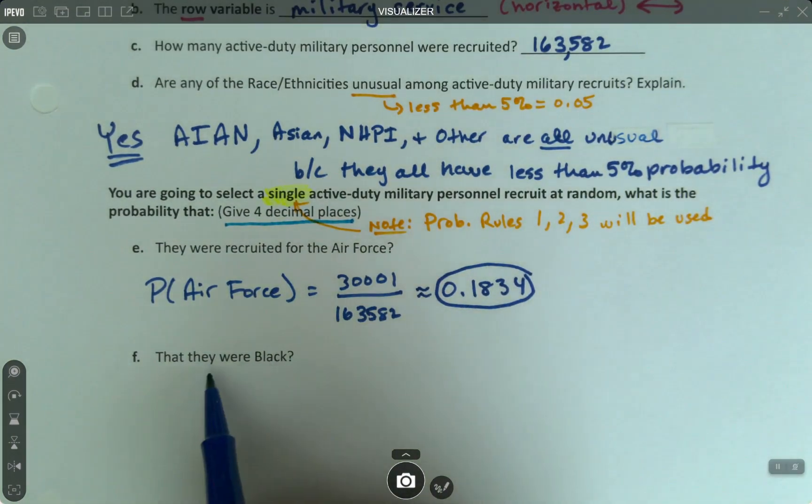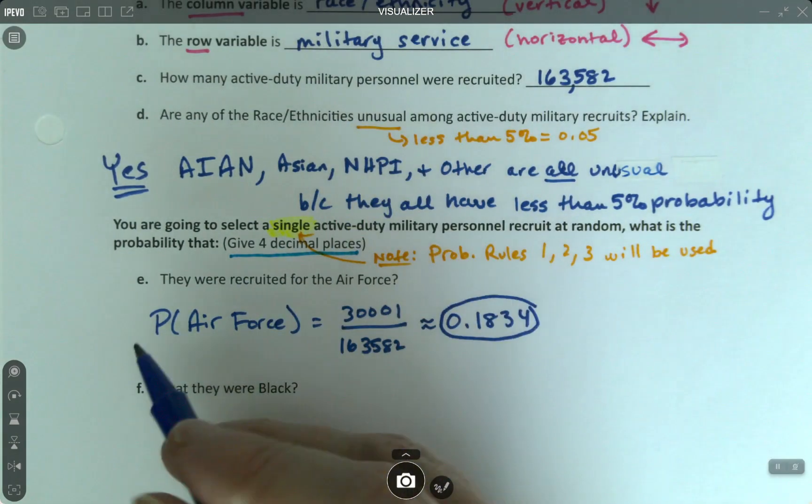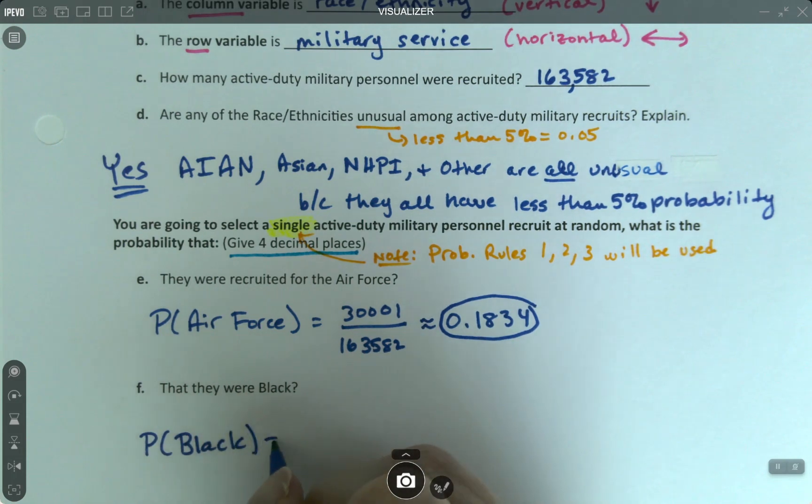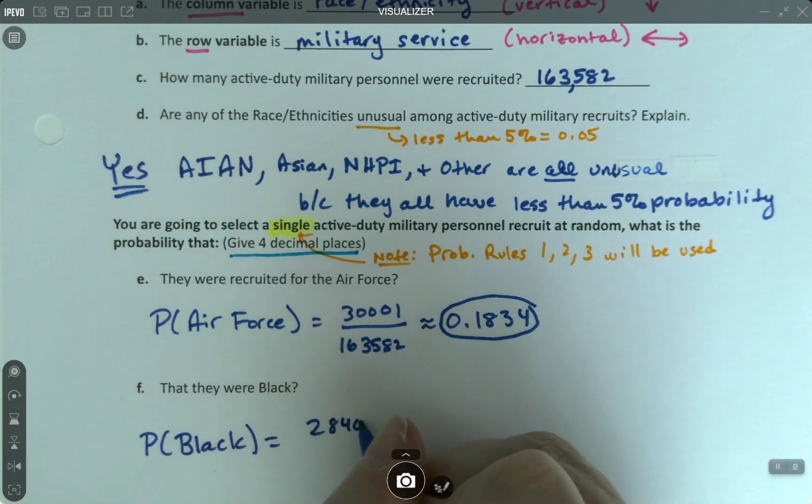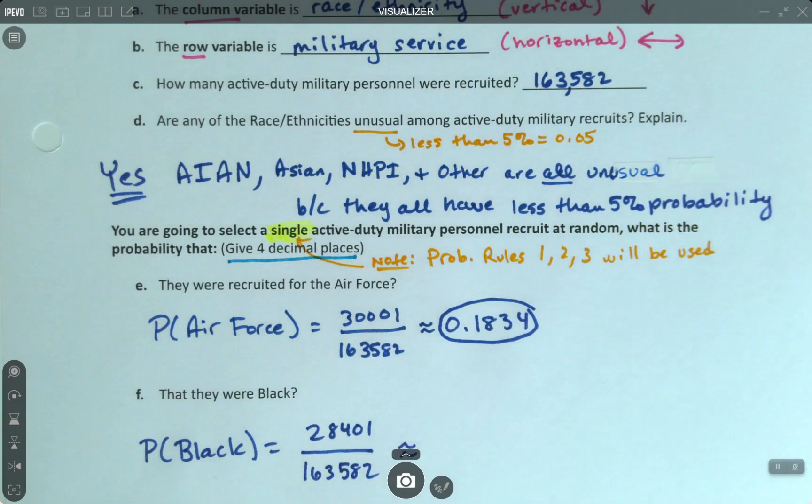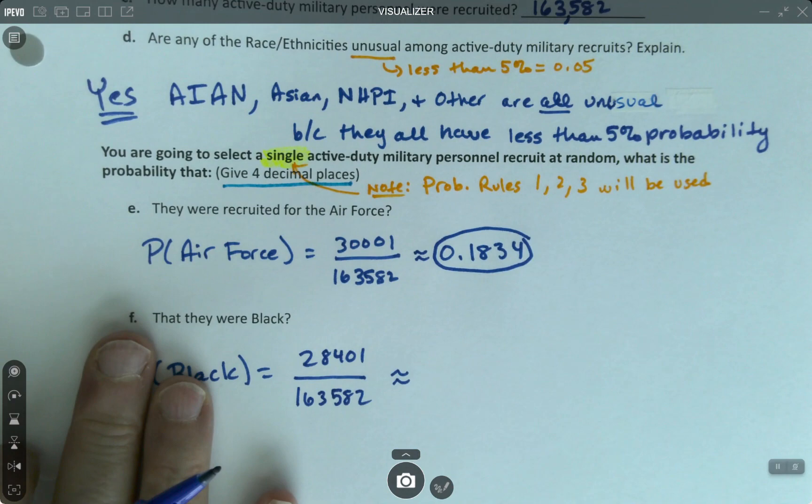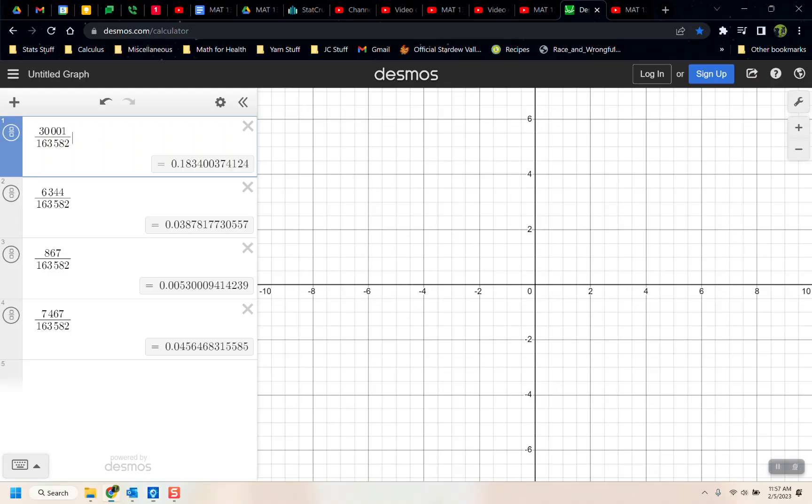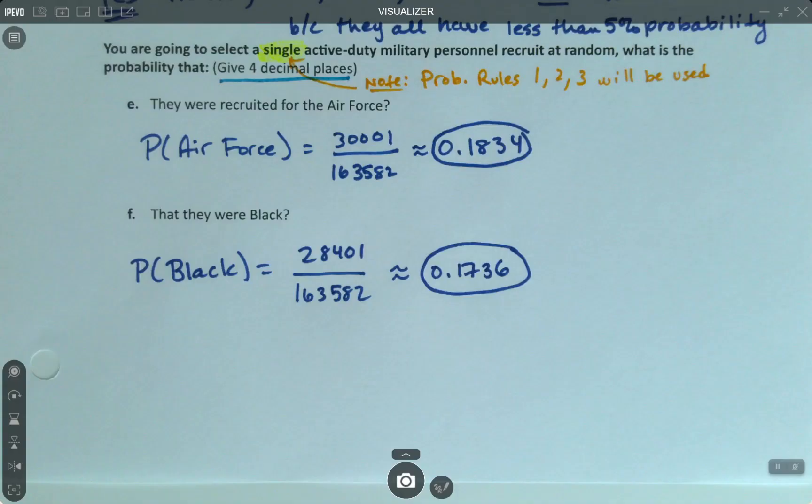Now what about probability they were black. Well, we already found that, but it was 2, 8... We found it briefly, but then we made it go away. So 28,401 divided by 163,582. Let me go grab decimals again. I'll just do it right here. 28,401 makes 0.1736. So I wrote that down.